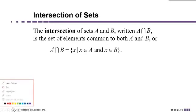The way that we describe that is we say the set of all elements x, such that x is an element of A, and it's also an element of B. It's what they have in common.